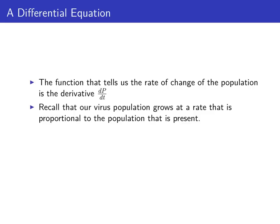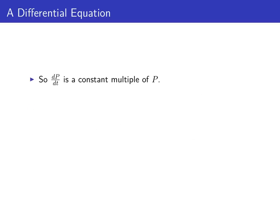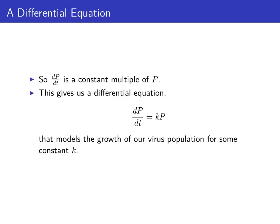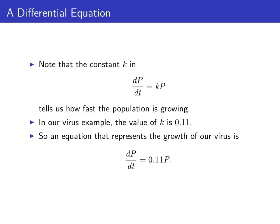Recall that we're making the assumption that our virus population grows at a rate proportional to the population that's present. Two quantities are proportional to each other if one is a non-zero constant multiple of the other. So since the rate of change of the population is proportional to the population, we conclude that dp/dt is a non-zero constant multiple of p. This gives us a differential equation dp/dt = kp, where k is some constant that models the growth of our virus population. In our example we're assuming a growth rate of 11 percent, so the value of k is 0.11.